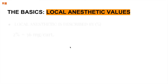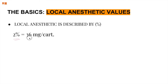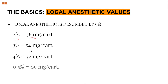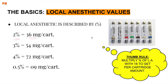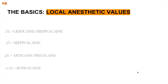Moving on to other values: if 2% equals 36 milligrams per cartridge, then 3% equals 54, 4% equals 72, and 0.5% equals 9 milligrams per cartridge. Notice the pattern — all are cartridge values. Each cartridge will have 36, 54, 72, or 9 milligrams of the respective anesthetic agent. The rule of thumb is to multiply the percentage number by 18 to get the per-cartridge amount. For example, 2% lidocaine: 2 × 18 = 36.